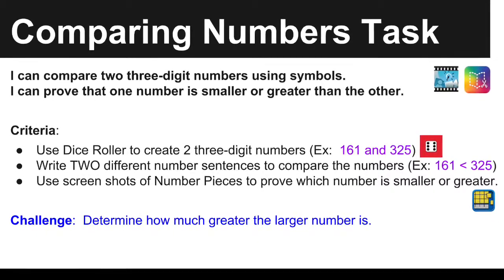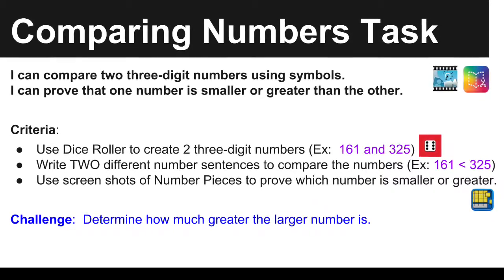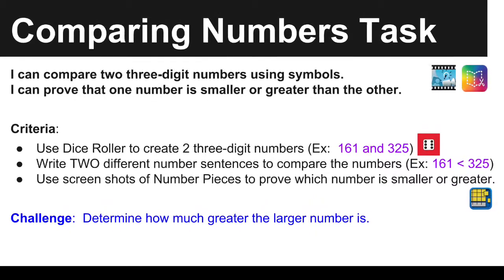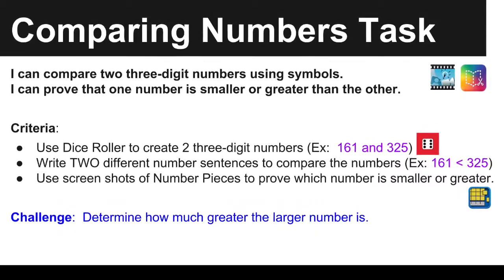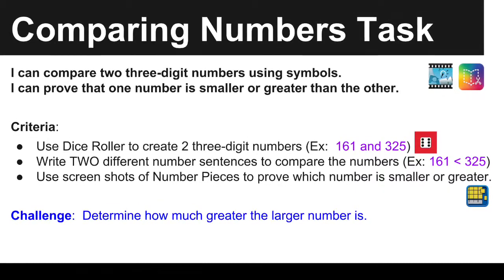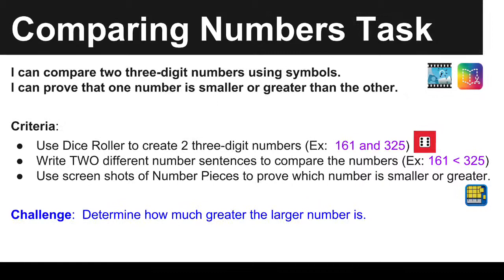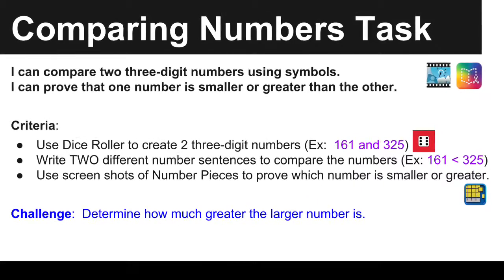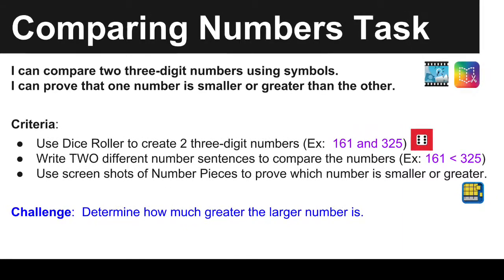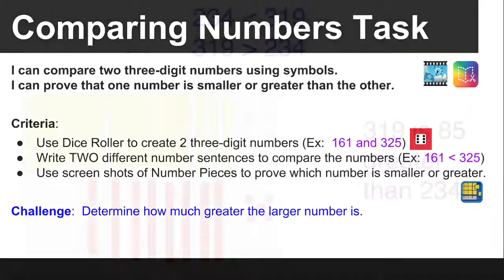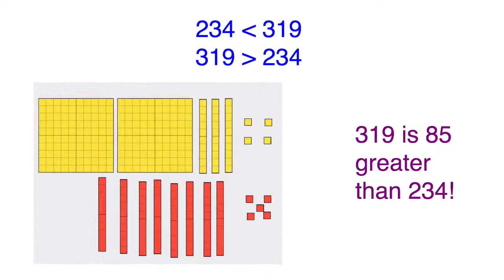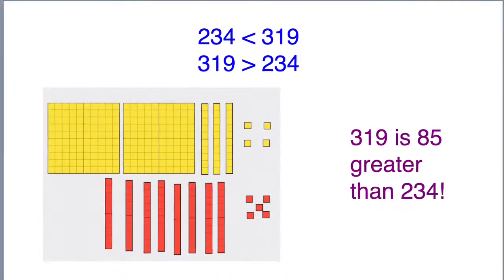Most students built the smaller number in one color of base 10 blocks in Number Pieces, and then in a different color added how many more they needed to make the greater number. As a challenge for students that were ready for it, they could determine how much greater the larger number is — which isn't very difficult once you see the two different colored base 10 blocks. Here's an example of what one page of a child's comparing numbers task may look like.